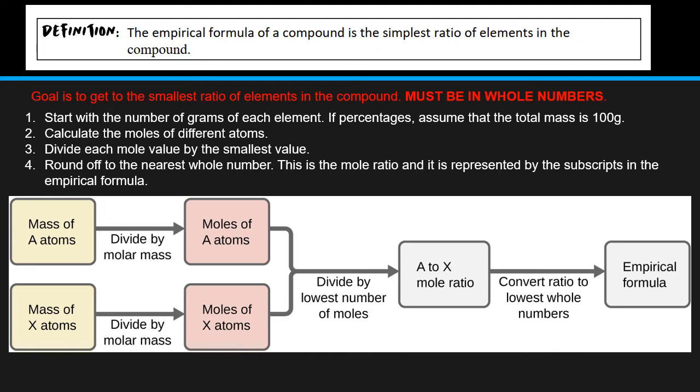So the empirical formula of a compound is the simplest ratio of elements in the compound. Remember that the simplest ratio, the simplest, which means that you might get the empirical formula of a compound, but that is not the molecular formula. So you've seen before, grade 10s, you could have two elements that have bonded together and formed a compound. The ratio of the atoms that are bonded in that compound determines the physical and chemical properties of that compound, and therefore the molecular formula.